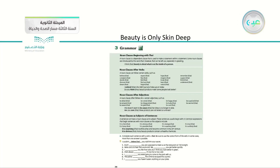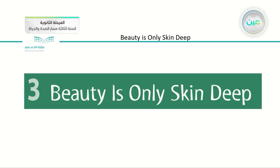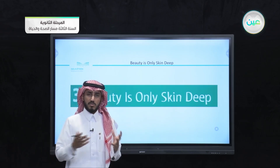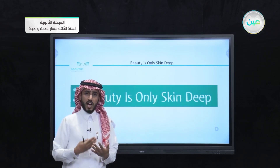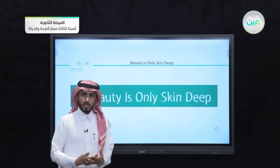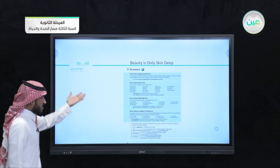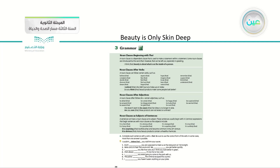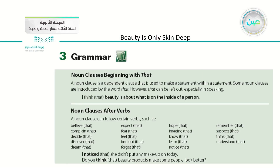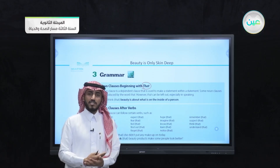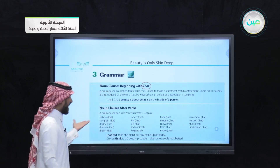In the previous lesson, we started with explaining the meaning of the unit, which is 'beauty is only skin deep.' We talked about that and said it means that beauty is something artificial — it doesn't reflect the inner beauty of people and their personal traits. This is the grammar lesson we learned together on page 36. We focused on noun clauses and their relation with the word 'that' in the first point, and then we talked about noun clauses after verbs.